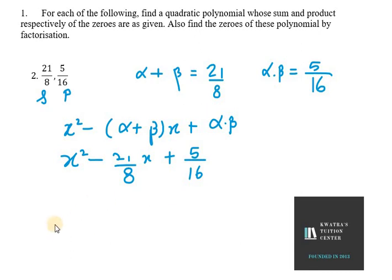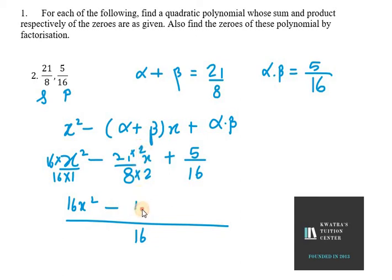So LCM of this equation will be 16. My first term gets multiplied with 16 because we have 1 at denominator so we need to make it 16. So 16 x square minus, now what we need to do in the second one is multiply it with 2, so it will be 21 into 2, which is minus 42 x plus 5. So now my equation will be 16 x square minus 42 x plus 5.